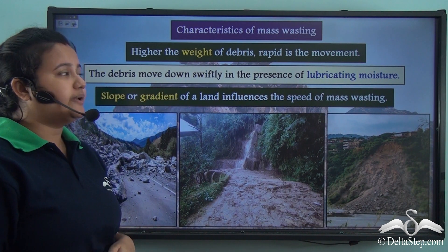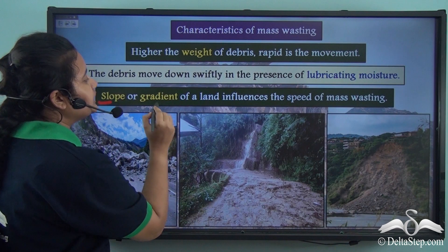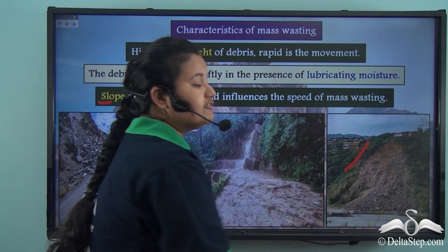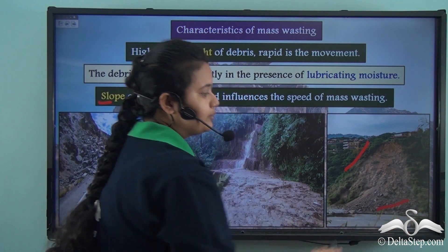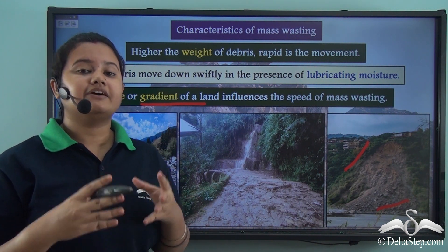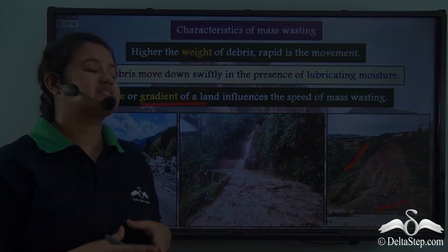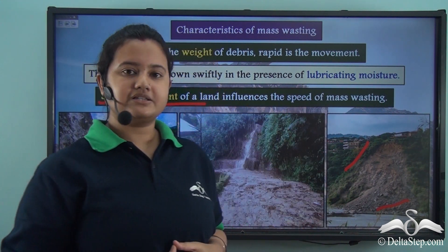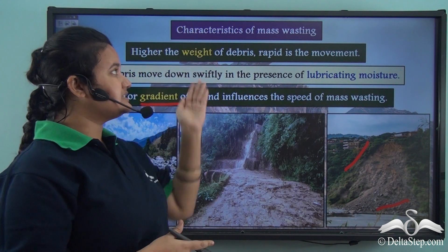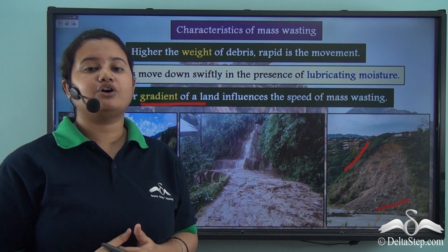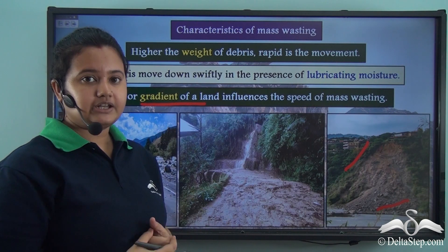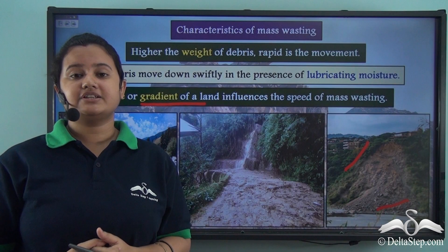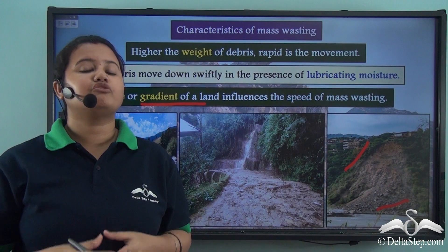Another factor that influences mass wasting is the slope or gradient of the land. The weathered rock particles move down a steep slope very rapidly compared to a flatter slope. So steeper the slope of a mountain or hill, the more rapid is the movement of weathered rock particles. Therefore the slope or gradient of a land also influences the speed of mass wasting. So apart from gravity, the influencing factors are: weight of debris, presence of lubricating moisture, and slope or gradient of the land.